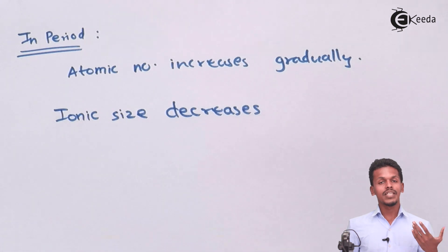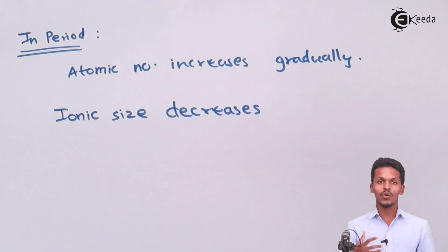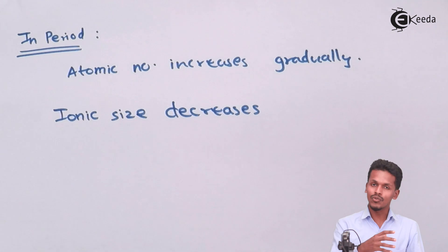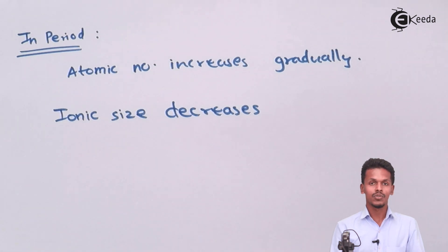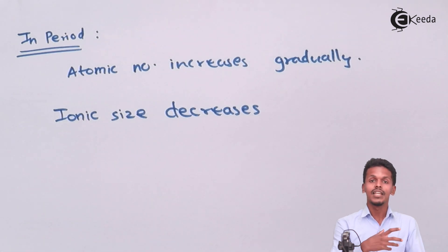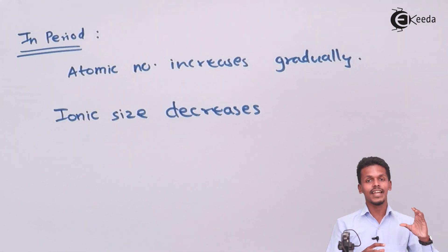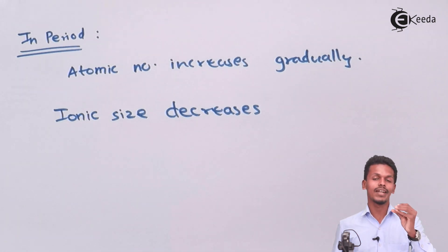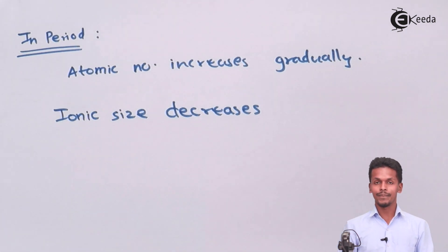The nuclear charge also goes on increasing because electrons are removed from the atom to form a cation. In that case, the nuclear charge increases and the ionic size goes on decreasing.